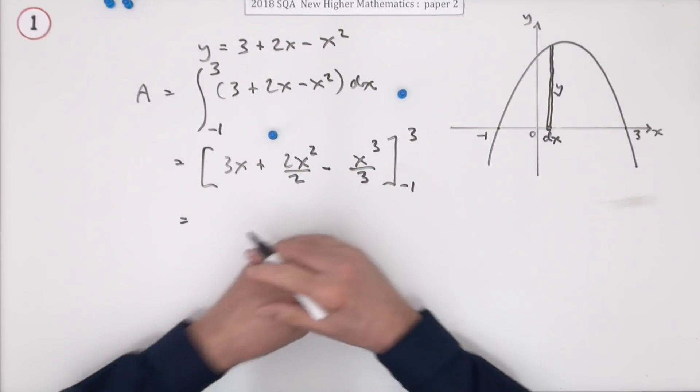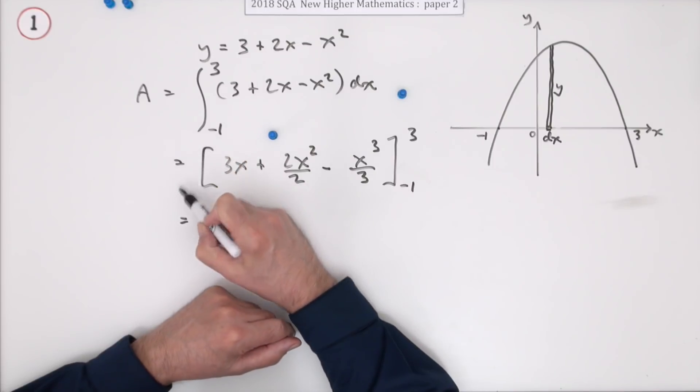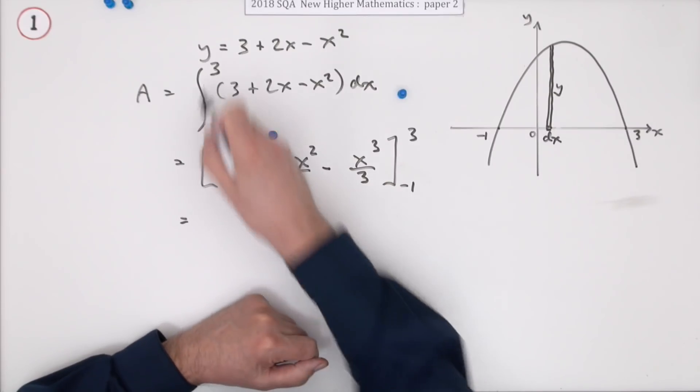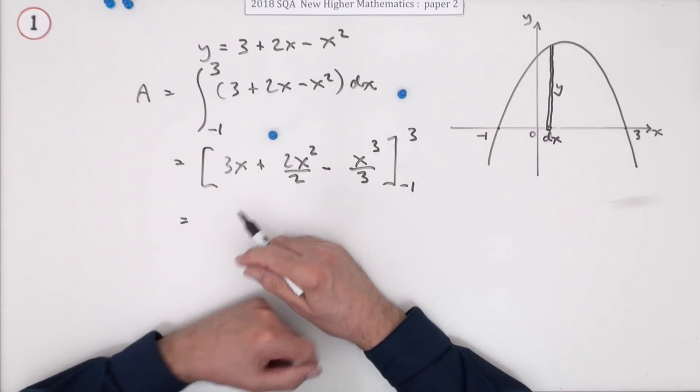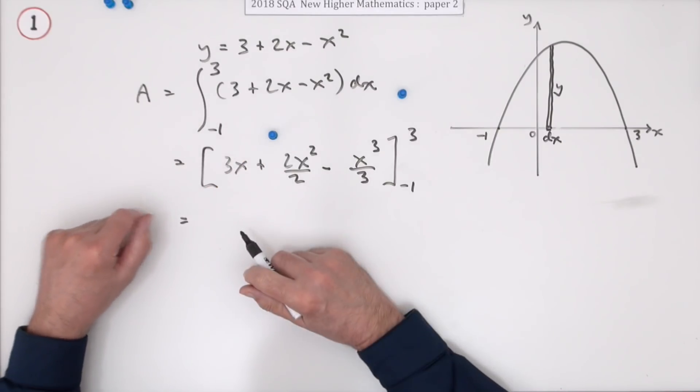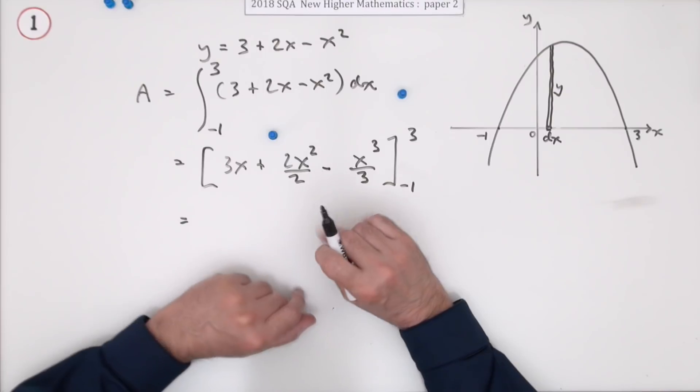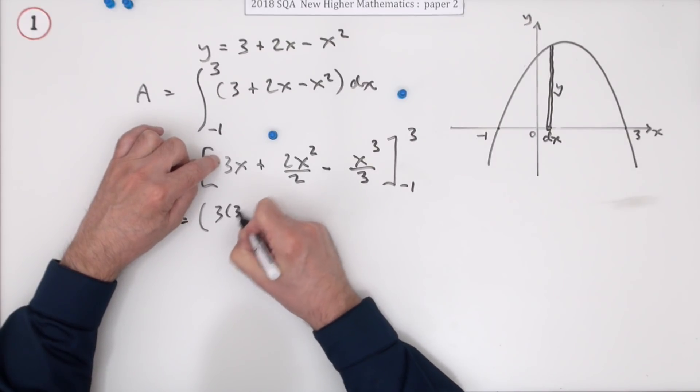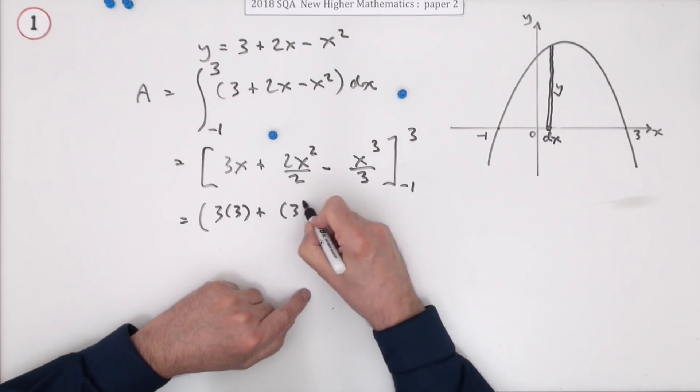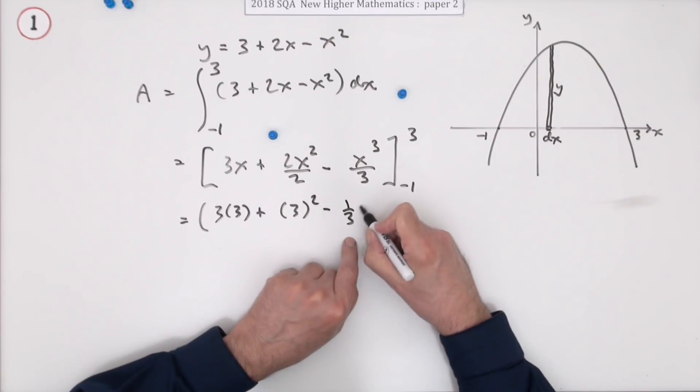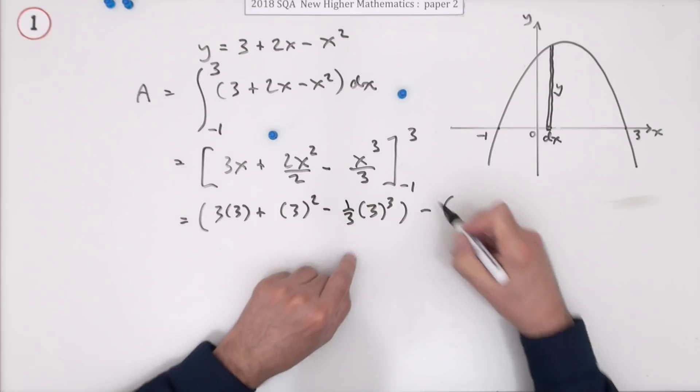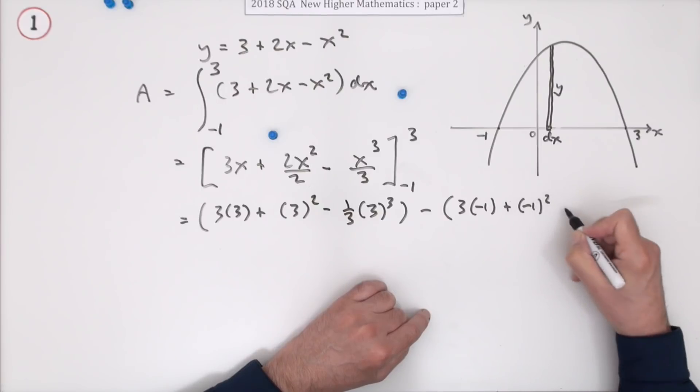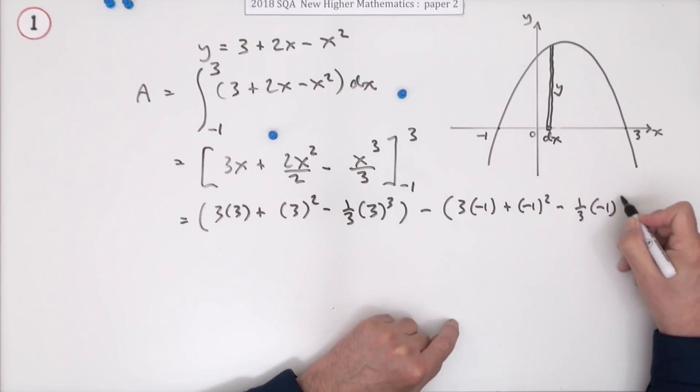Now, substituting the limits. Remember to get rid of your integral sign once you've done the integration. Now, I notice it says don't penalise the continuation of the integral in this part. But strictly speaking, that's wrong because you've done your integration. If you put an integral sign in here, that implies you're going to integrate it a second time, and you're not. Now, putting the limits. So that's going to be 3 times 3. Now that's just 1. So that's just 3 squared minus, I'm going to put it this way, a third of 3 cubed minus. Now you put in negative 1s. 3 times negative 1 plus, and of course they cancel,